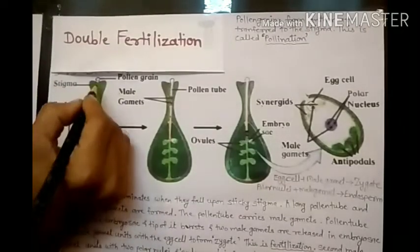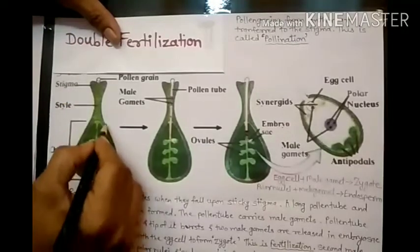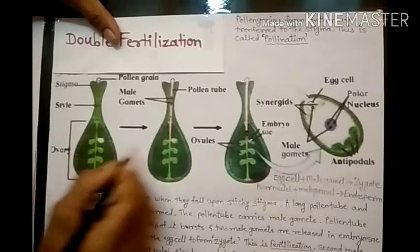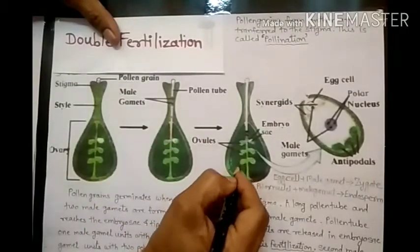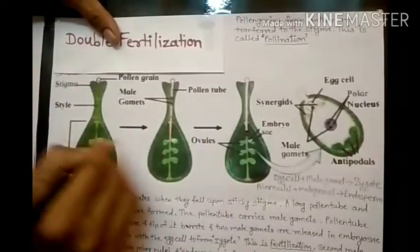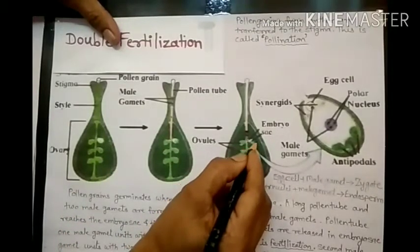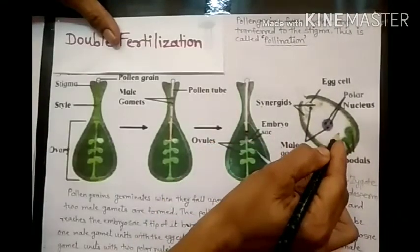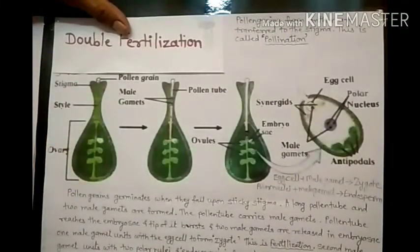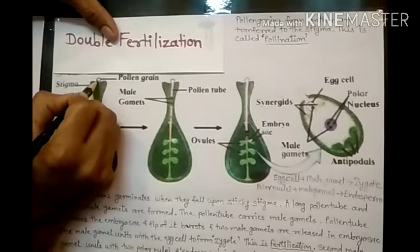Here is the gynoecium. Here is the stigma. Then the style, and this is the ovary — the lower part is the ovary. The ovary contains ovules. These ovules contain the embryo sac. When pollen grains are transferred to the stigma, this is called pollination.